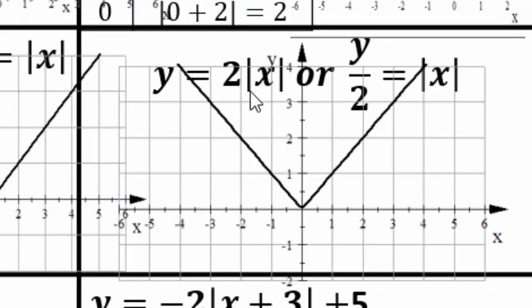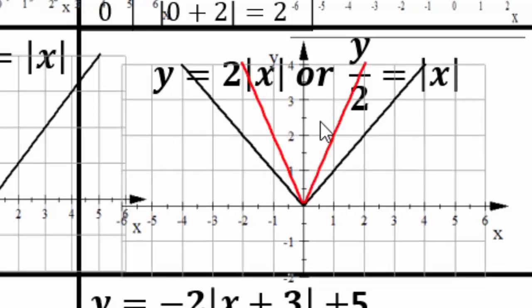For y equals 2 times |x|, all y coordinates are multiplied by 2. So (1,1) becomes (1,2) and (2,2) becomes (2,4). You don't always have to make a table if you know what is happening, but a table guarantees the right answer.